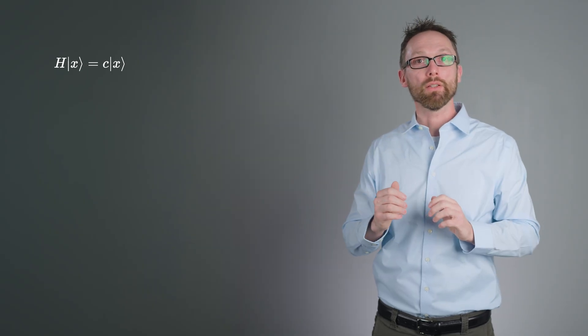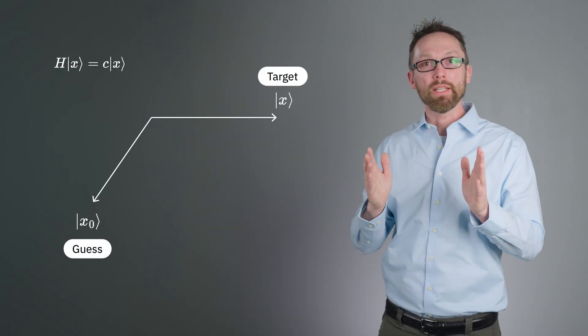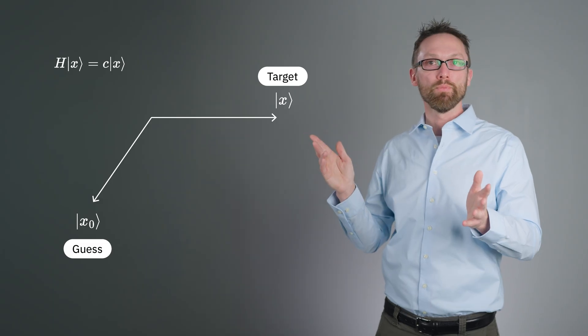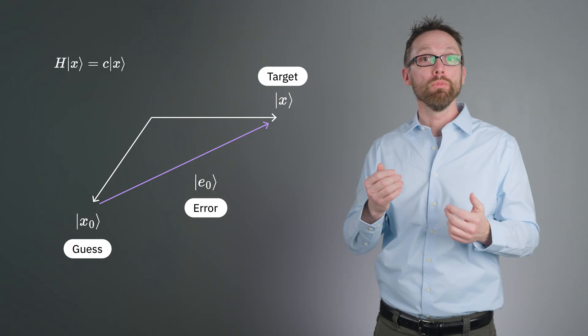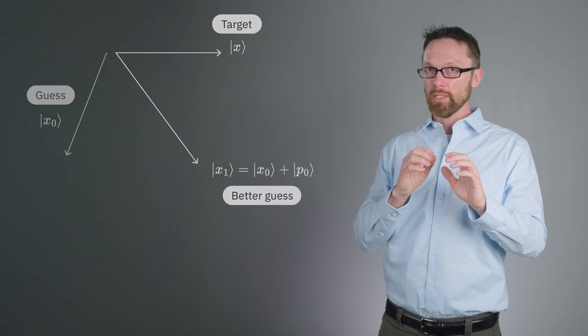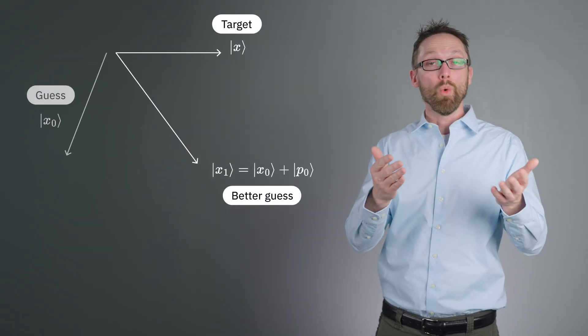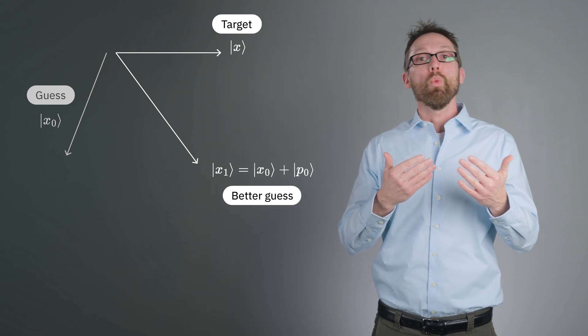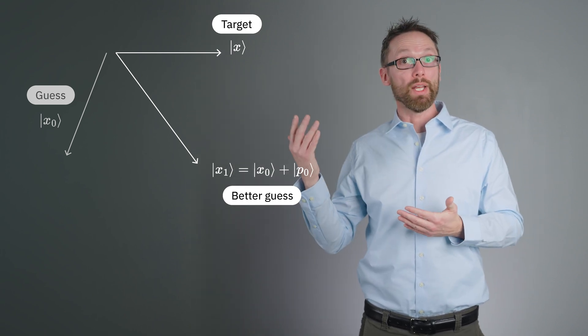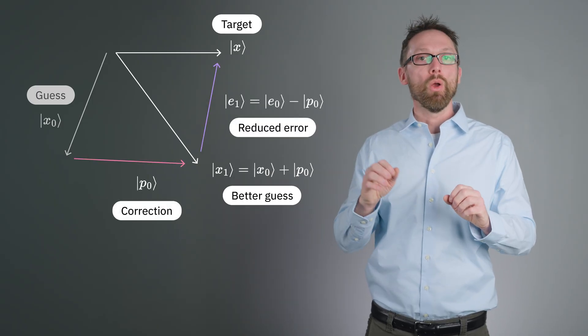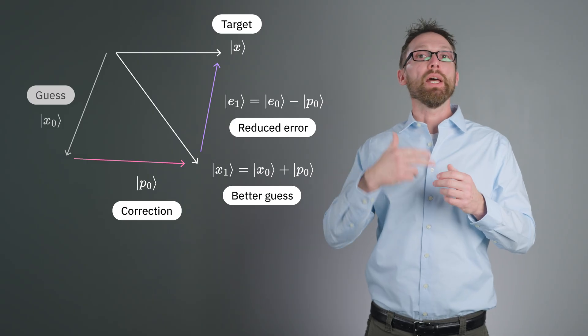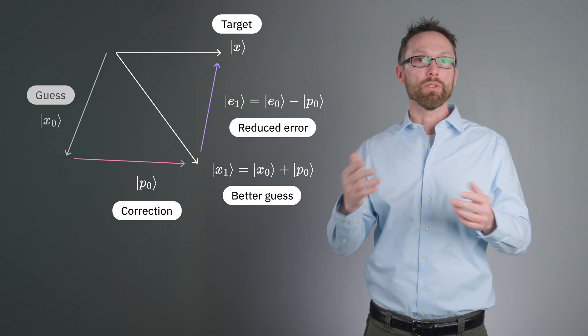We wish to solve a problem of the form H acting on the vector X gives us some constant times the vector X. Let's start with a guess of our eigenvector X0. This is just an approximate solution. It has error, which we call E0. Now we want to make an update of this guess, which we'll call X1, which we hope improves our approximation. We can express this as the original X0 plus some correction P0, which is yet to be determined. We can repeat this process iteratively, adding more and more correction vectors PI.